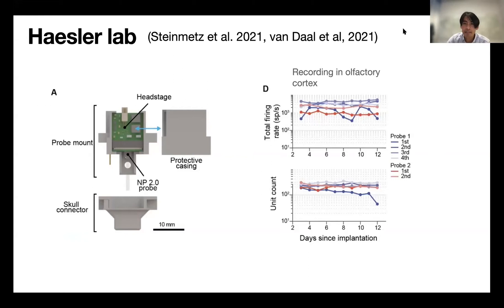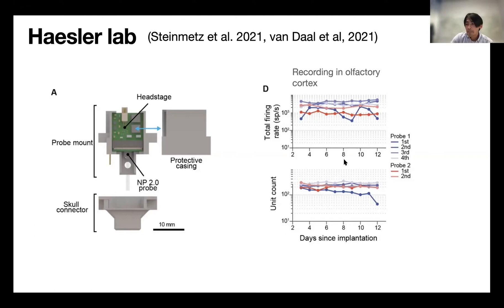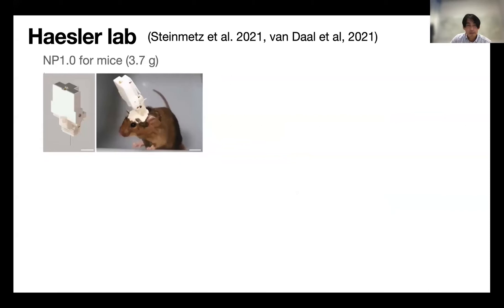Next is from the Sebastian Haesler lab — this is a very complete design. They again use 3D printed parts for the base and the probe mount, which also includes room to house a head stage. Importantly, this assembly is then protected by additional casing. They've used this system to record in olfactory cortex, and the stability of units over two weeks is good. They show that the probe assembly can be reused, with no appreciable decline in probe performance across multiple insertions.